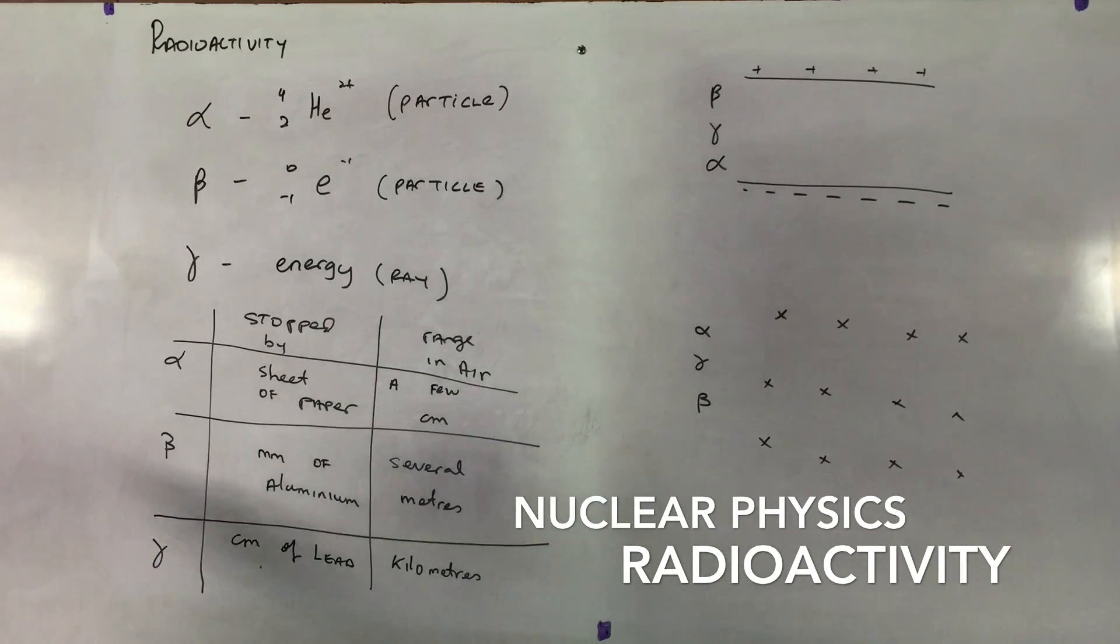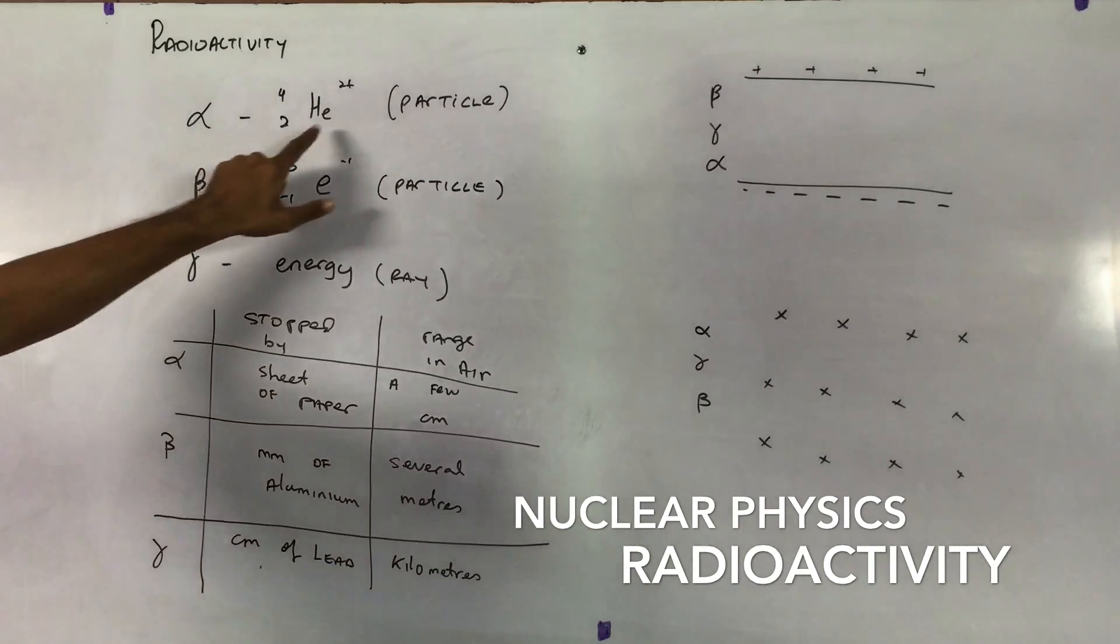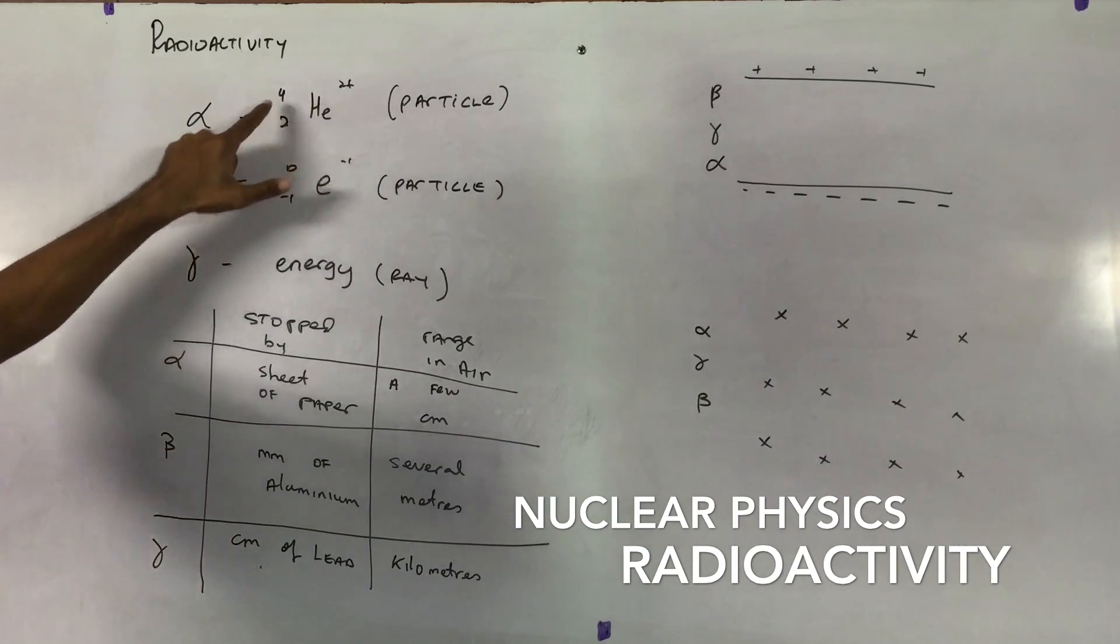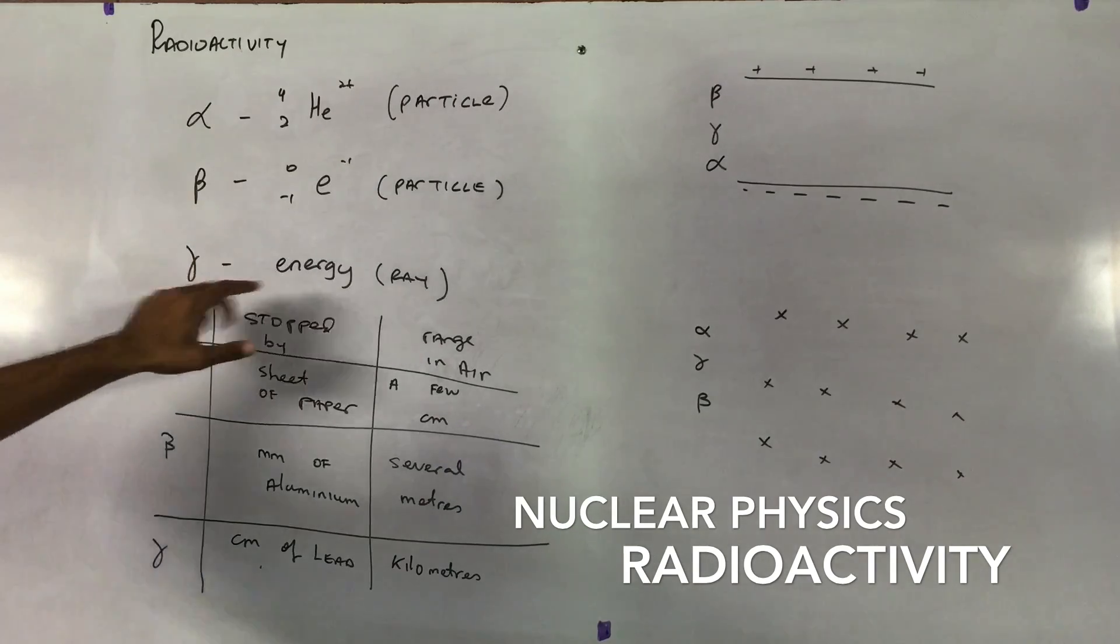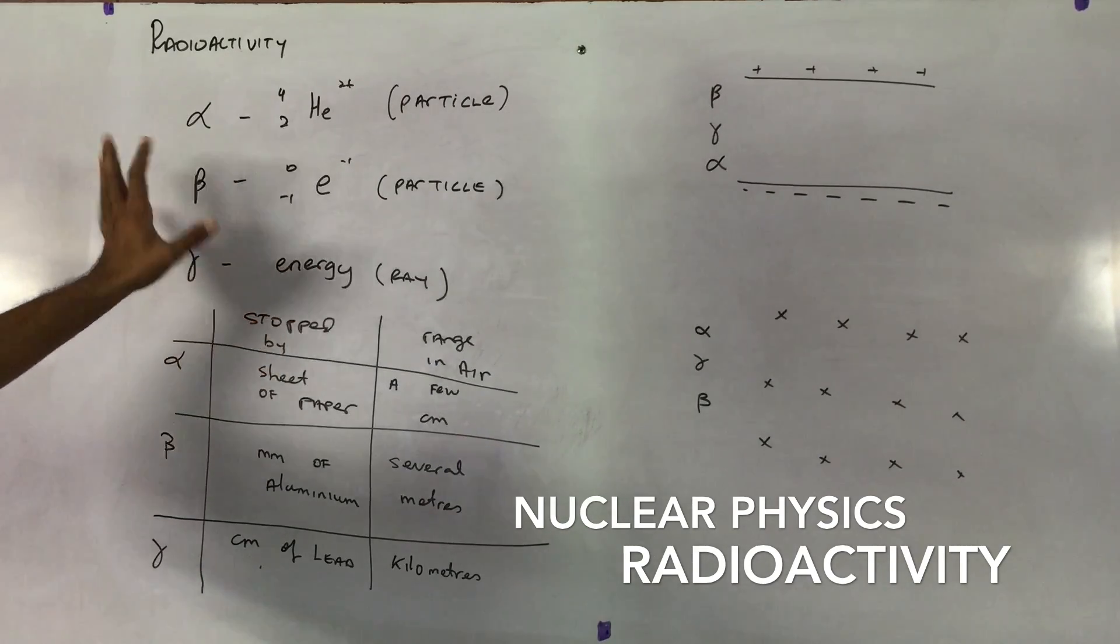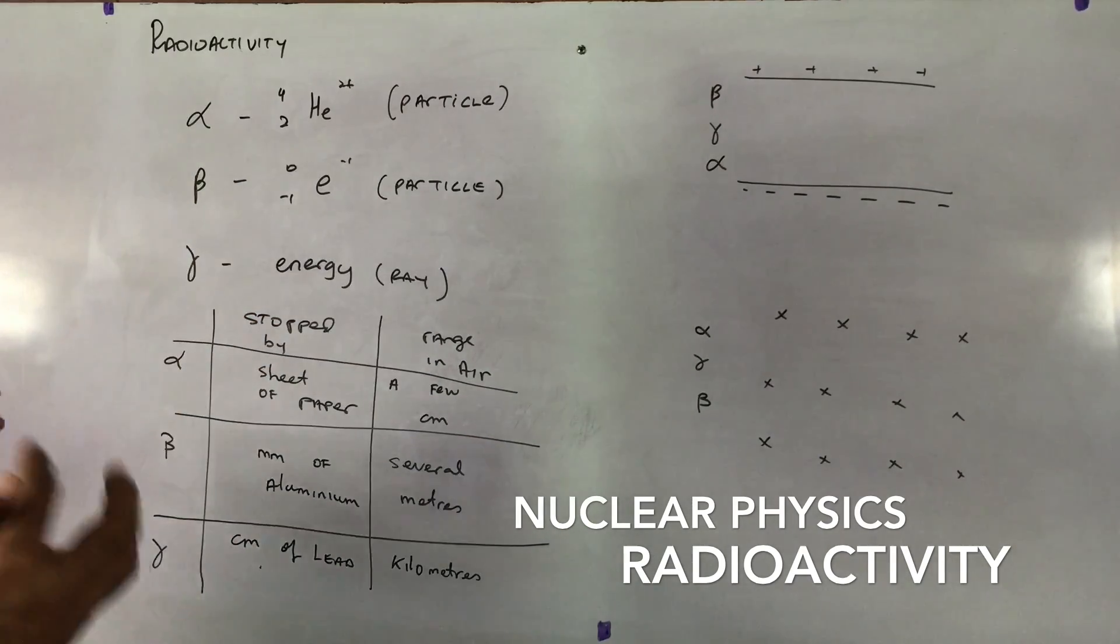So we look at the alpha and the beta particle and the gamma. We notice that the alpha particle is a bit larger or a bit heavier than the beta particle. And gamma is just a ray, not a particle at all. It's just a substance of energy.